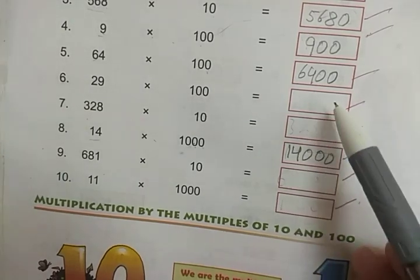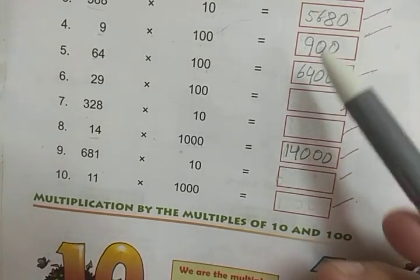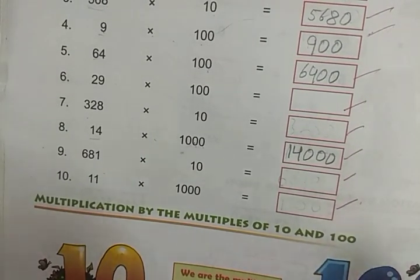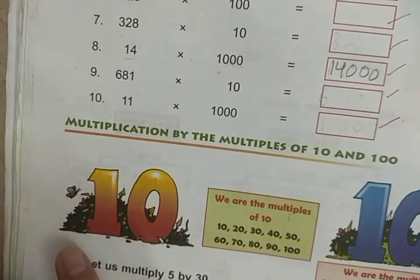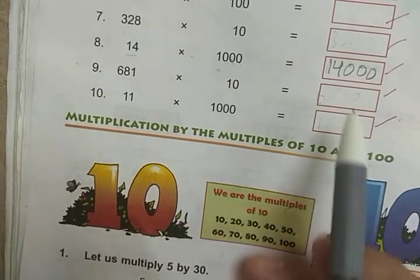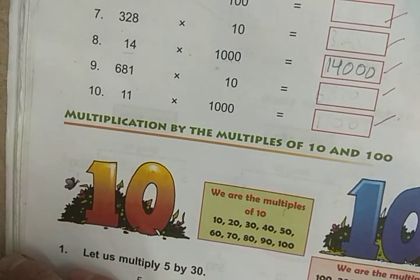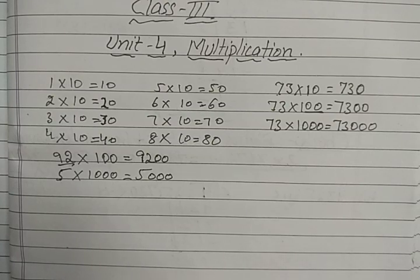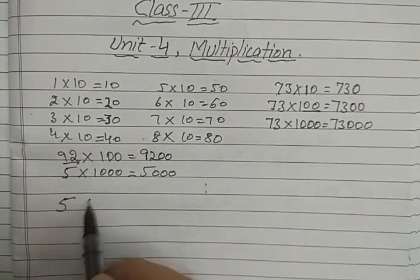So in this way you can solve these questions orally. There are four more parts for you to do yourself. I hope you understand how to solve these types of questions. Now we will learn how to multiply a number by the multiples of 10 and 100. Multiples of 10 means 10, 20, 30, 40, 50 — numbers having one zero. Multiples of 100 means 100, 200, 300, 400 — numbers which have two zeros.